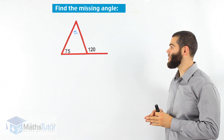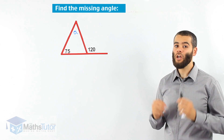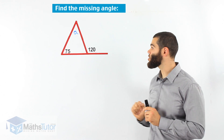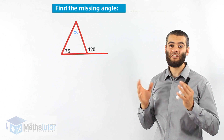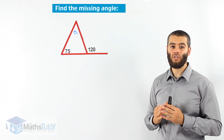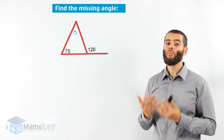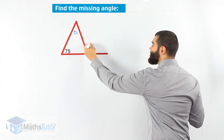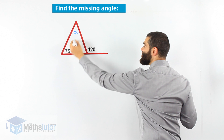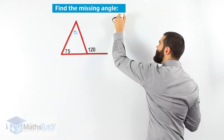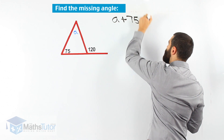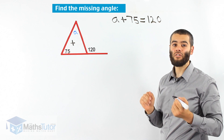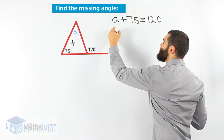Let's look at this diagram. We're asked to find the missing angle, but we notice the missing angle is not the exterior angle — it is the interior angle inside the triangle. We use the same exterior angle of a triangle concept, the same rule, to find the interior angle, but we do what's opposite. We know that A plus 75 equals 120 degrees — these two added together make 120 degrees.